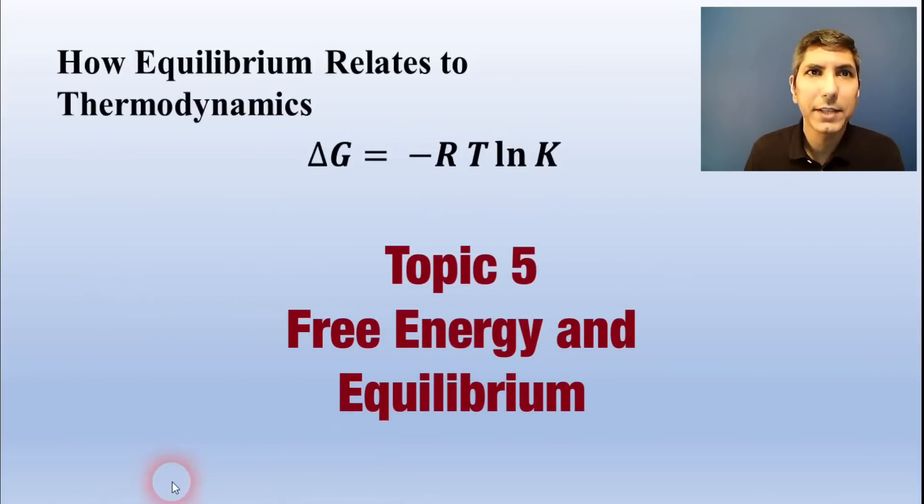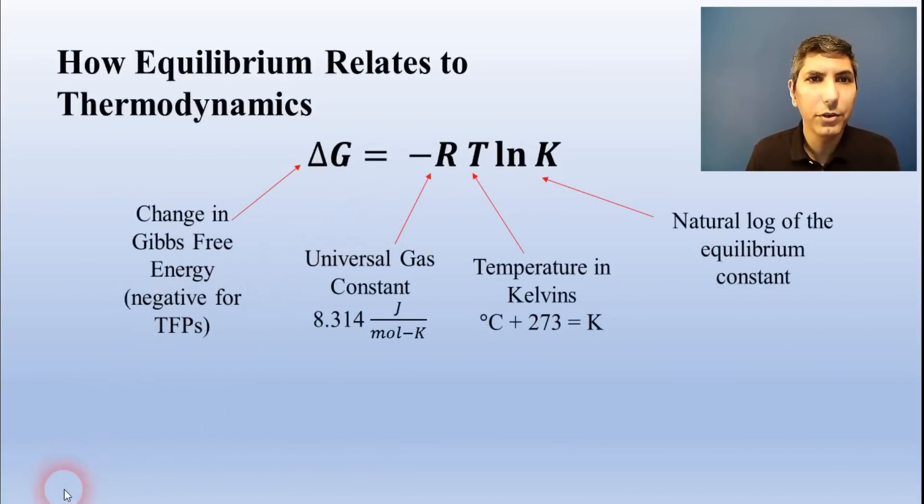Gibbs free energy is related to the equilibrium constant by the equation delta G equals negative R times the Kelvin temperature times the natural log of the equilibrium constant, where R equals 8.314 joules per mole per Kelvin. We're usually given the temperature, so if we know either the delta G or the equilibrium constant, we can calculate the other one quite easily.